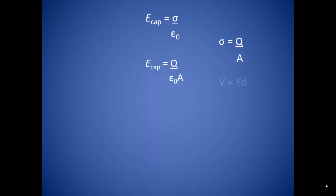We can substitute those values into the equation for the capacitor's electric field. We also know that the electric potential in a uniform field is the strength of the electric field times the distance the charges move. This is handy because electric potential is something we can measure easily with a voltmeter. So the potential difference, ignoring negative signs for now, is the charge on the capacitor times the distance between the plates divided by the area of the plates and the permittivity of free space.